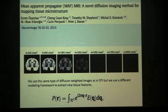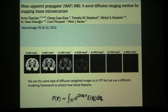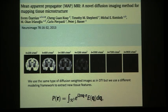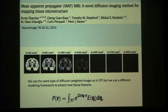One problem with Callaghan's approach and DSI — proposed by Wedeen at the Martinos Center — is that it's a brute-force 3D FFT relating the displacement distribution to signal attenuation. If you want 32 Q-values in X, 32 in Y, and 16 in Z, you're talking about roughly 32,000 diffusion-weighted images needed for a high-resolution reconstruction. This is completely impractical clinically. We recognized this early and tried strategies to obtain the propagator with vastly reduced data — essentially compressing the acquisition.